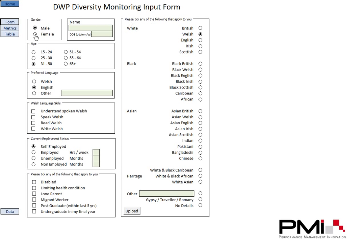Within the data form we've got a whole host of different options to pick. This is based on a paper form which is handed out at the end of training sessions and gathers information such as gender, age ranges, language skills, that sort of thing. Once we fill in this data, we can click on the upload button, and what that does is transfer that data to the bottom of the table and also automatically update the metrics.